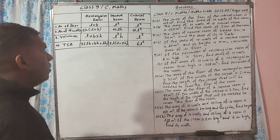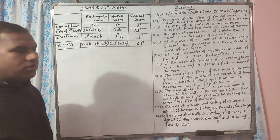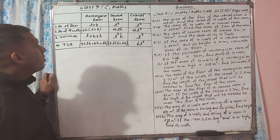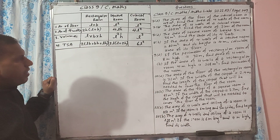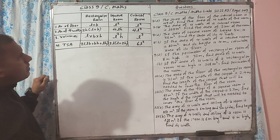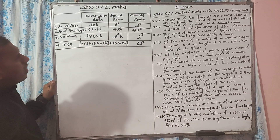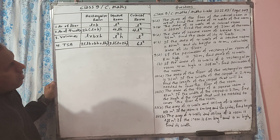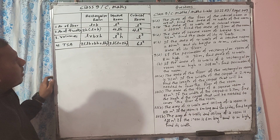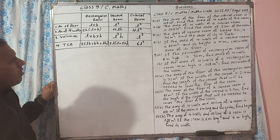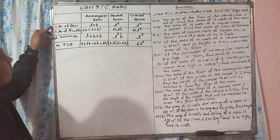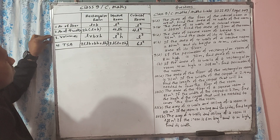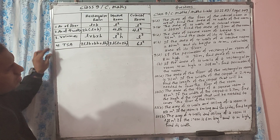Good morning students. Today we will do some questions from class 9 Compassion Mathematics, Math links, page 149. We will cover area of floor, area of four walls, volume, and total surface area.